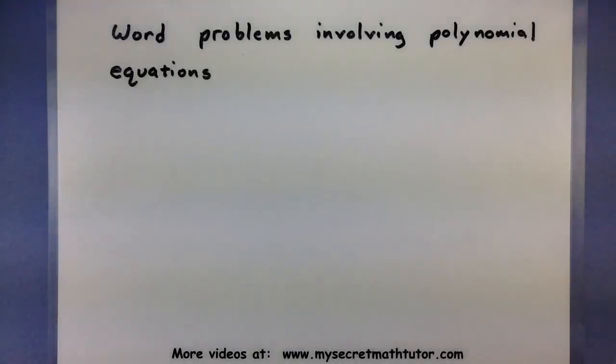For this video, we're going to work on a word problem involving a polynomial equation. In order to solve a polynomial equation, usually we go through a process of factoring, finding the zeros, and then testing those zeros, seeing which one actually works out.